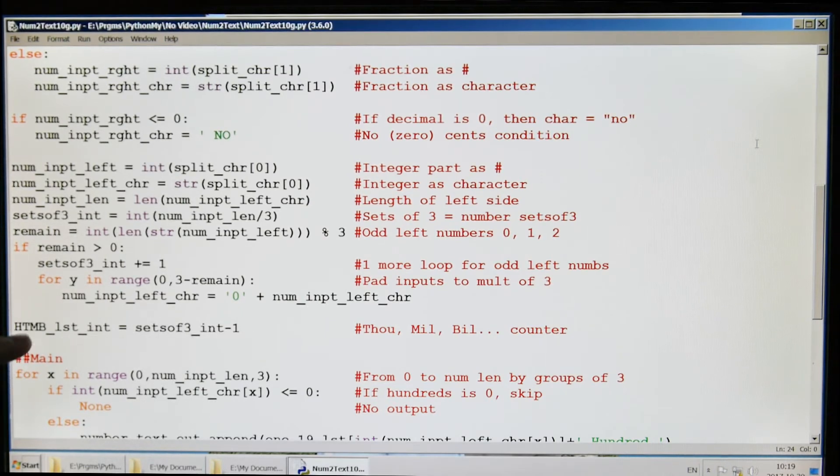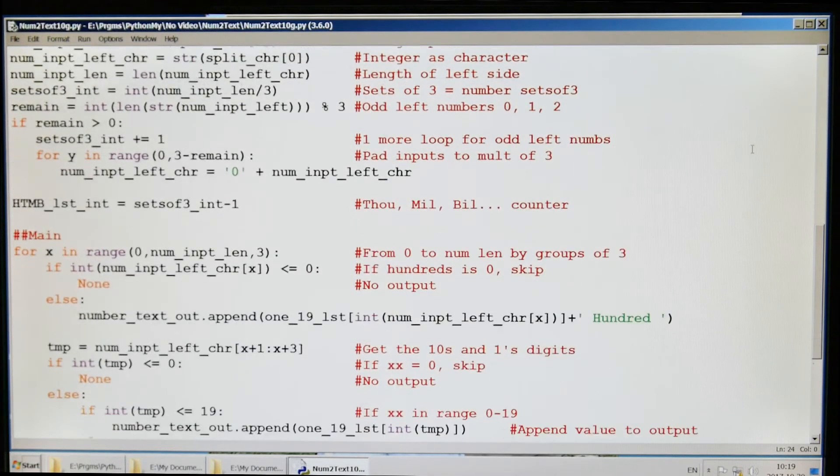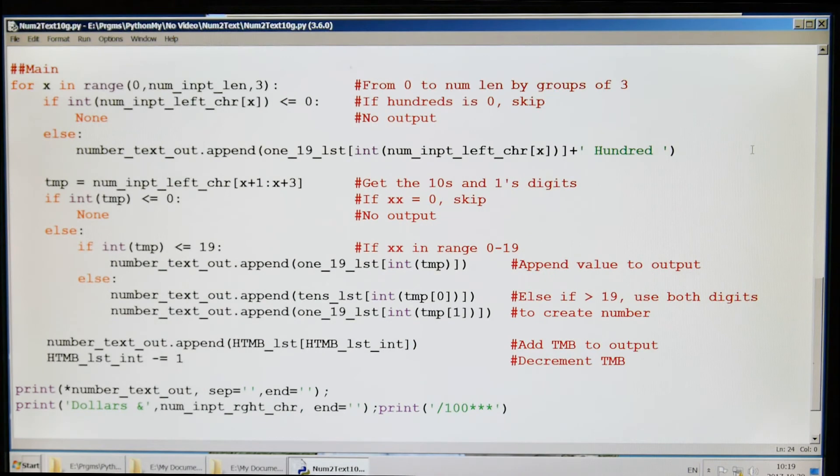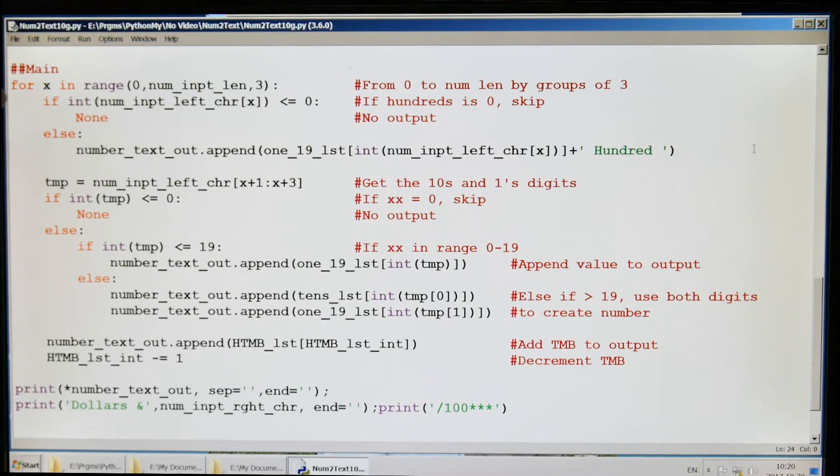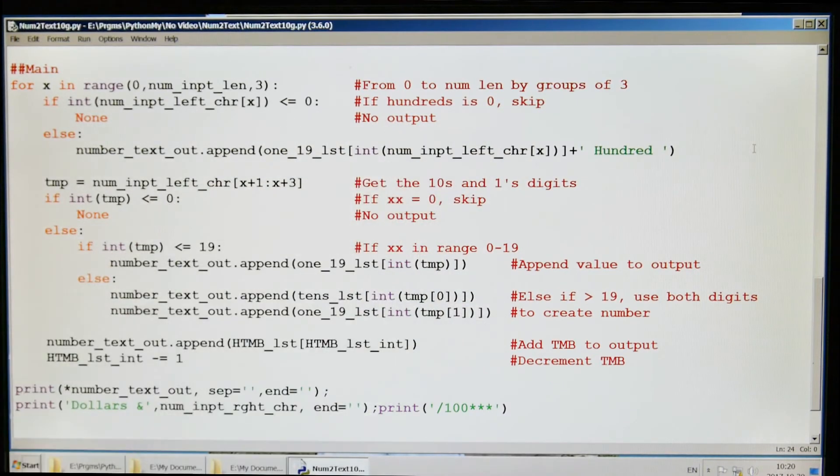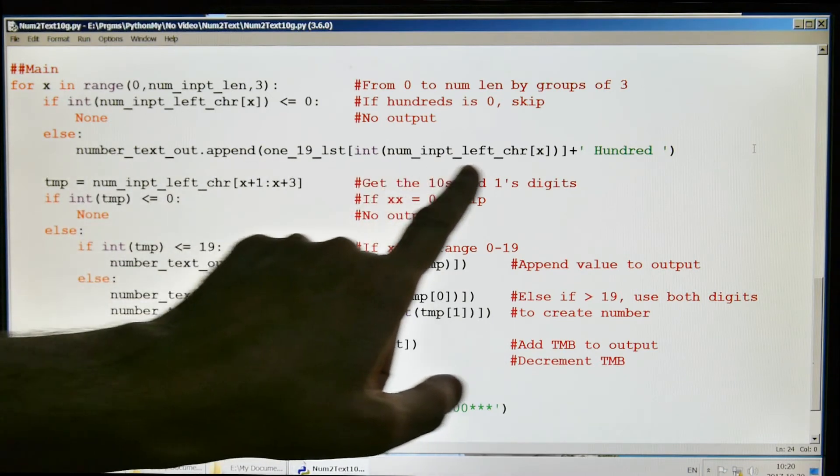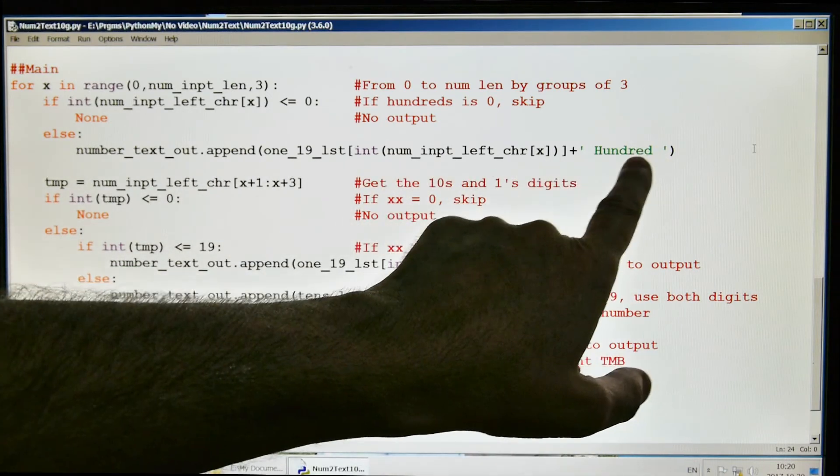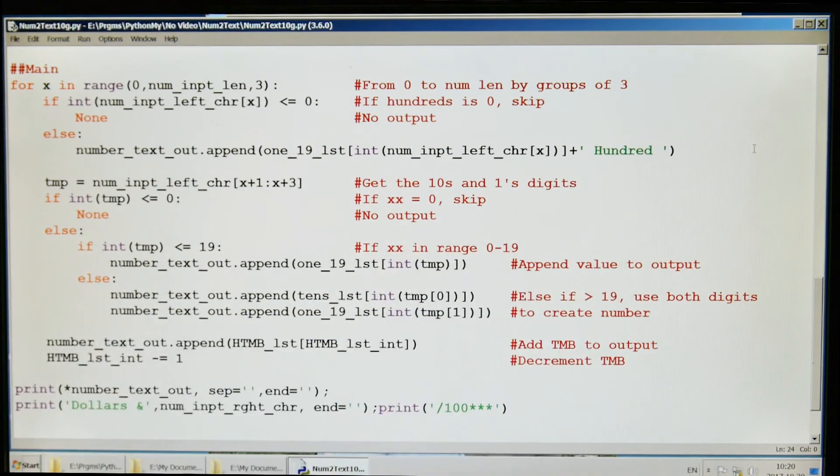This is the thousands, millions, billions counter. Come down here to the main part of the program. We're just going to grab groups of threes. If the hundreds is zero, skip it—there's no output. If that's true, otherwise we're going to start appending the hundred part onto the number.